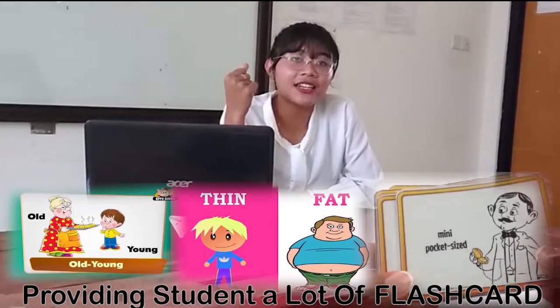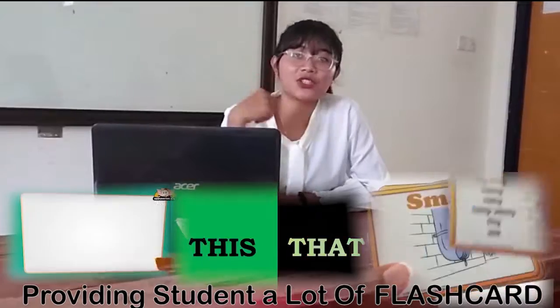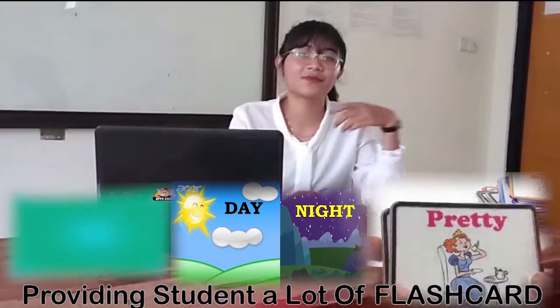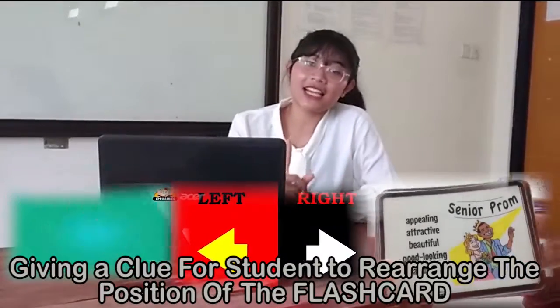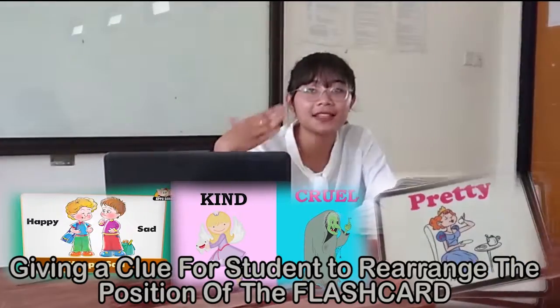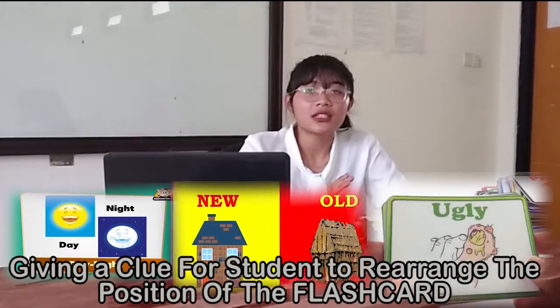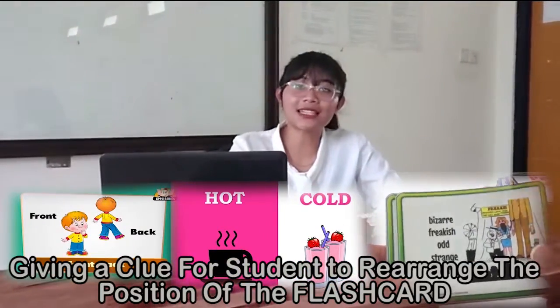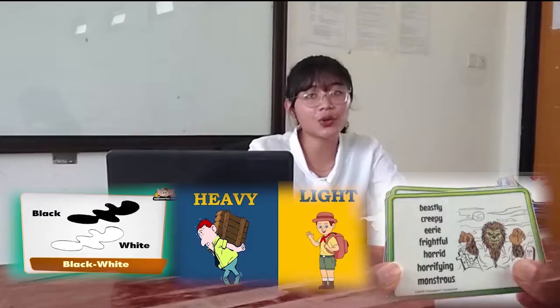First, providing students with flashcards that contain many topics about antonyms and synonyms. The teacher can add pictures to make it easy to understand based on the word given. Second, giving a clue to students to rearrange the position of the flashcards. For example, there are flashcards about a kingdom — king, queen, cabinet, soldiers, and so on. After finding the antonyms and synonyms, they should rearrange the cards based on position, like king beside the queen, then cabinet, then soldiers.